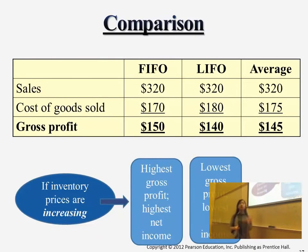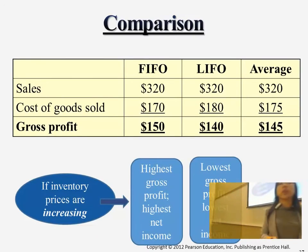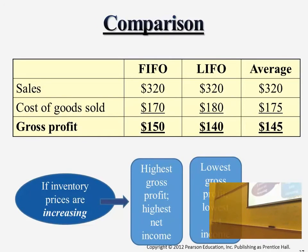So this will lead to a different amount of gross profit. Under FIFO, since cost is the least, gross profit will be the highest. Under LIFO, since cost is the highest, gross profit will be the least. Average cost is always somewhere in the middle of those two.